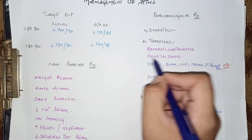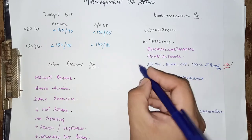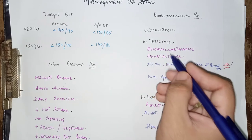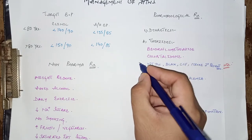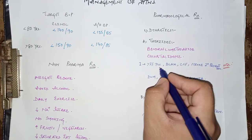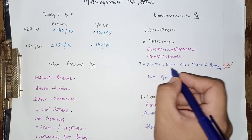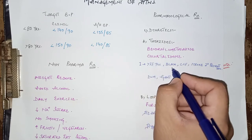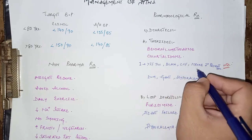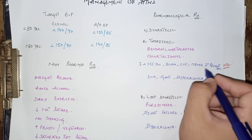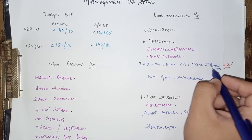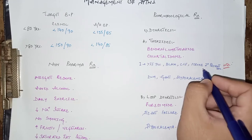The thiazide diuretics consist of bendroflumethiazide, the most commonly used drug at a dose of 2.5 mg oral tablet daily, and chlorthalidone. The compelling secondary indications for thiazide diuretics are: age more than 55 years, Black/African-American hypertensive patients, congestive cardiac failure, and secondary stroke prevention after the first attack.